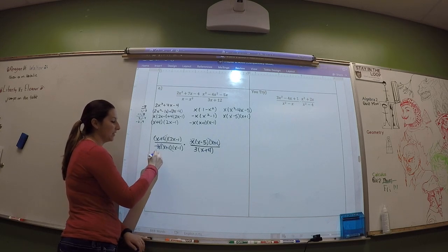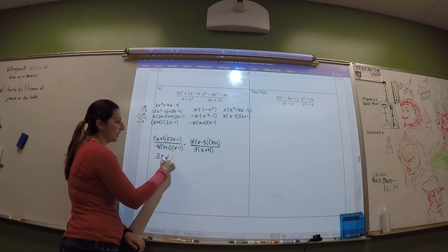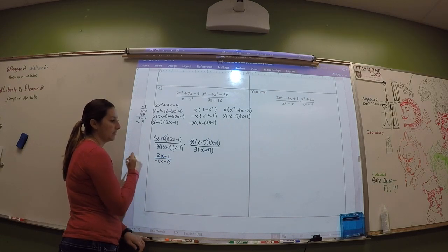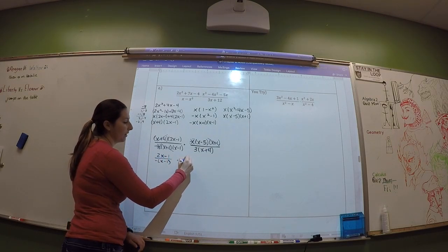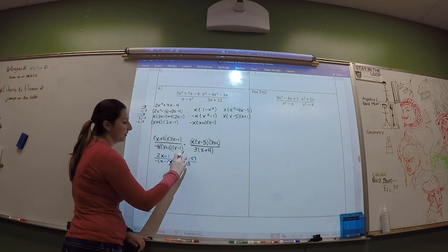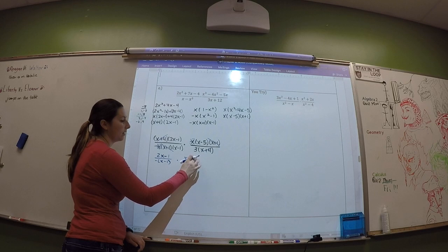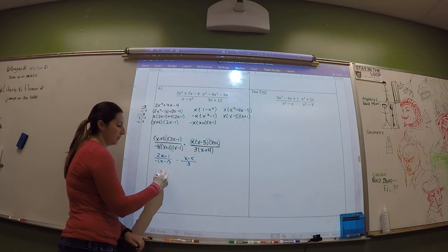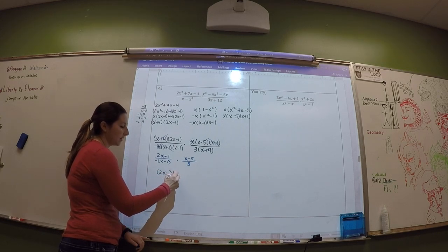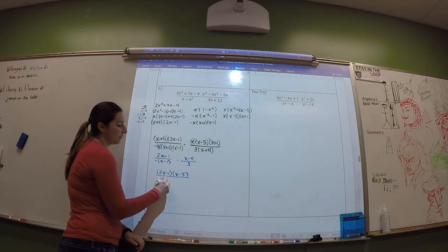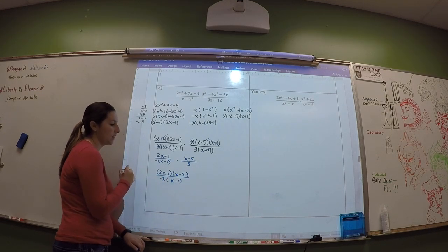So what I have left is 2x - 1 over negative x - 1. And then over here I have x - 5 over 3. So overall would be 2x - 1. So 2x - 1 times x - 5 all over. I'm going to put the negative sign and the 3 together. So negative 3 and then x - 1.